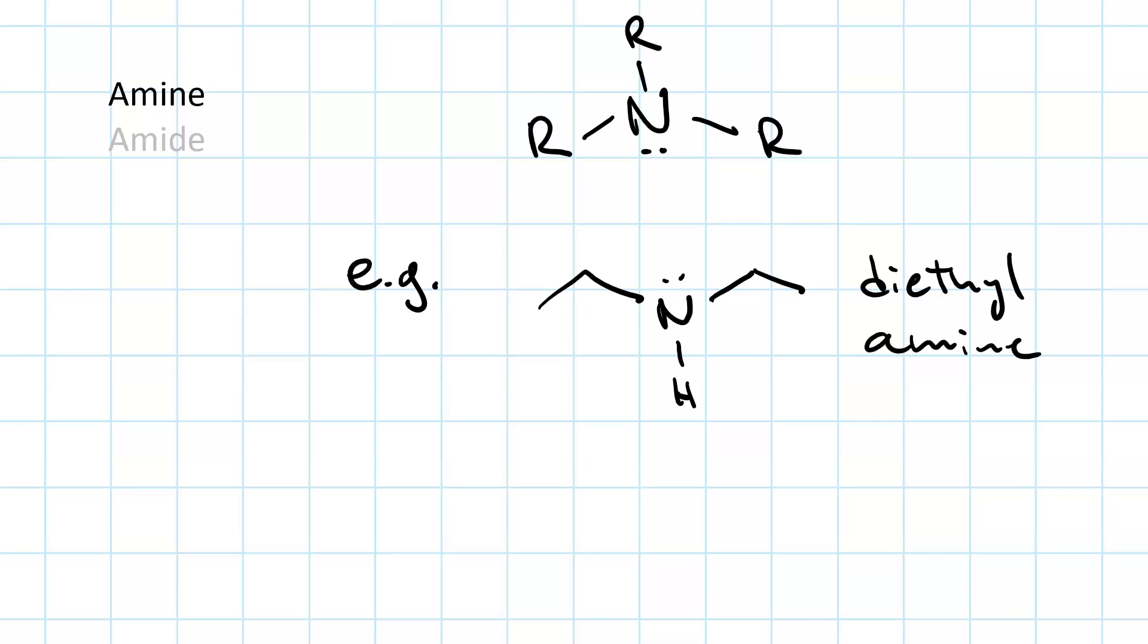An amine contains an amino group, which is a nitrogen that has one lone pair and three single bonds. This example is diethylamine, and its condensed structure would look like this.